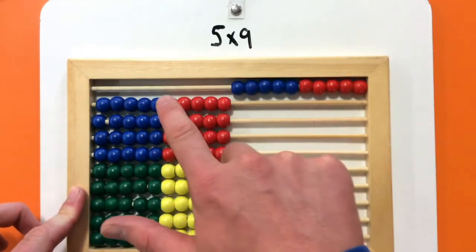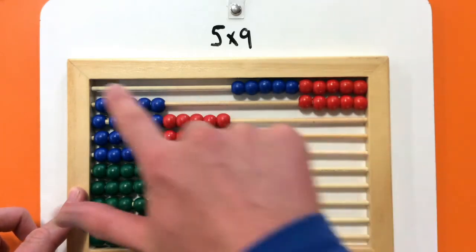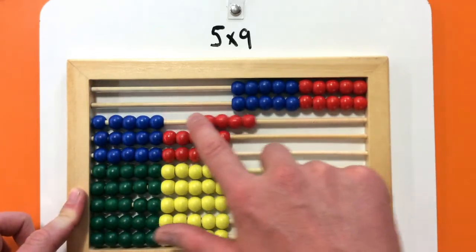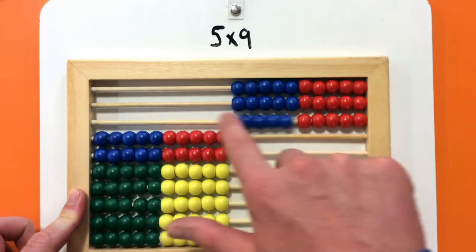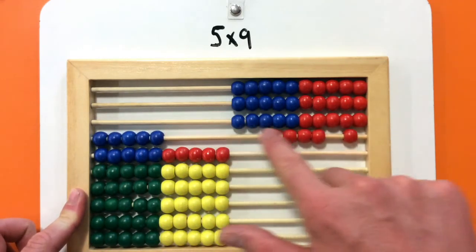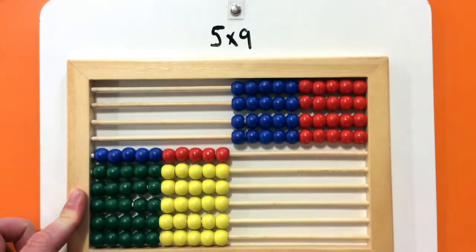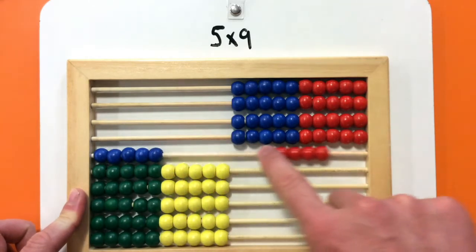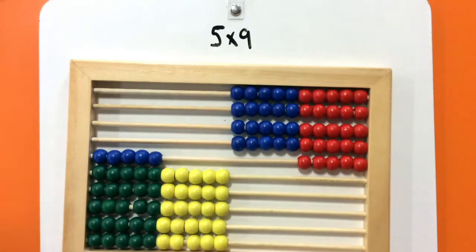10, that's 2, 15 is 3, 20 is 4, 25 is 5, 30 is 6, 35 is 7, 40 is 8, and 45 is 9.